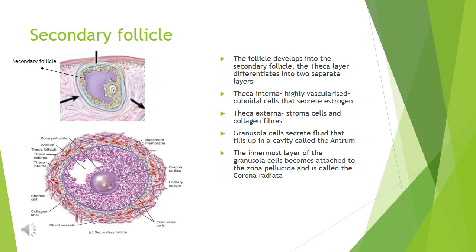As the follicle develops, it becomes the secondary follicle, in which the theca layer differentiates into two layers. The theca interna is highly vascularised and contains cuboidal cells that secrete estrogen. The theca externa contains stroma cells and collagen fibres. The granulosa cells secrete follicular fluid that fills up the inner cavity called the antrum. The innermost layer of the granulosa cells becomes attached to the zona pellucida and is called the corona radiata.